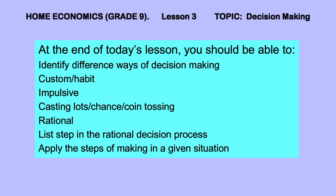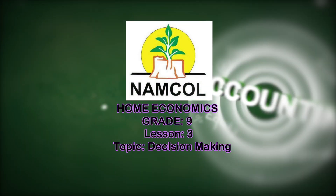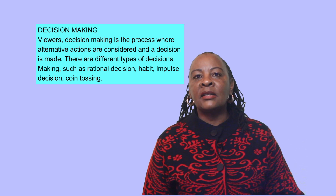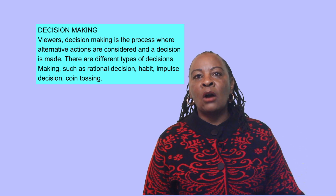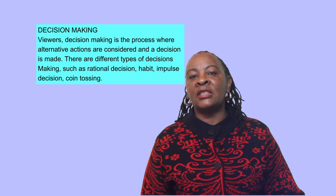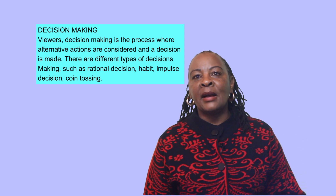Decision making is the process where alternative actions are considered and a decision is made. There are different types of decisions such as rational, habitual, impulsive, and coin tossing.